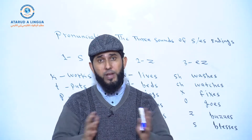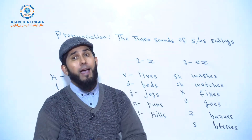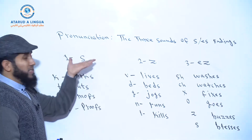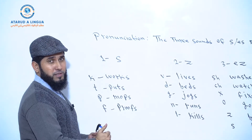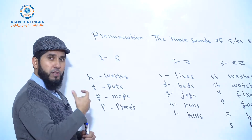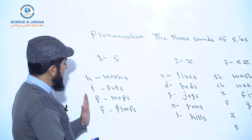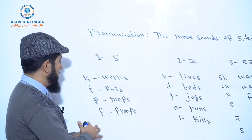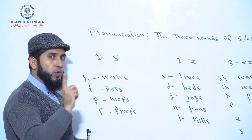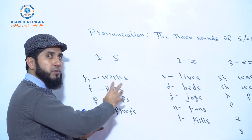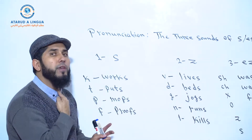This pronunciation lesson is related to S or ES endings. We have voiced consonants and we have voiceless consonants. These letters are voiceless consonants. If you want to practice how to pronounce these words correctly, you need to put your finger over here and pronounce these letters.